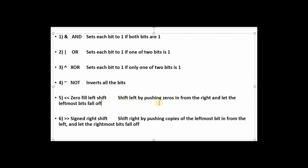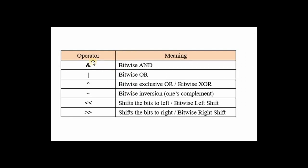The right shift operator shifts bits from the right side. These are the bitwise operators: AND, OR, XOR, NOT, left shift, and right shift. You can use them in programs as I will demonstrate.